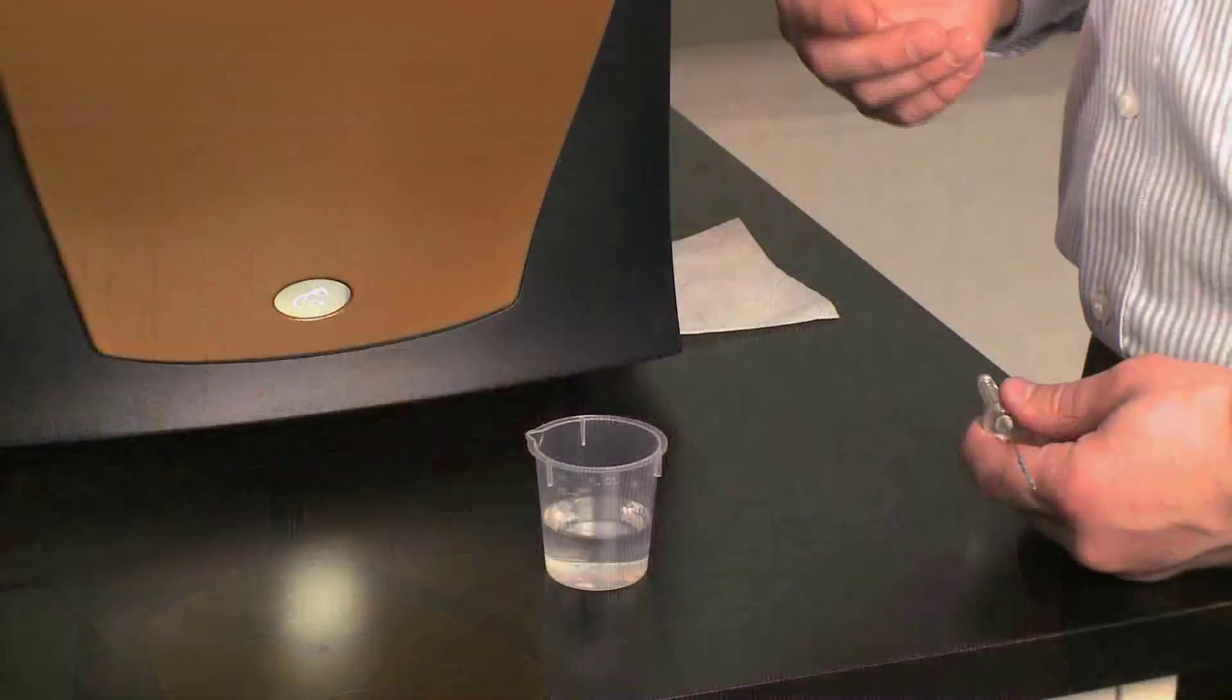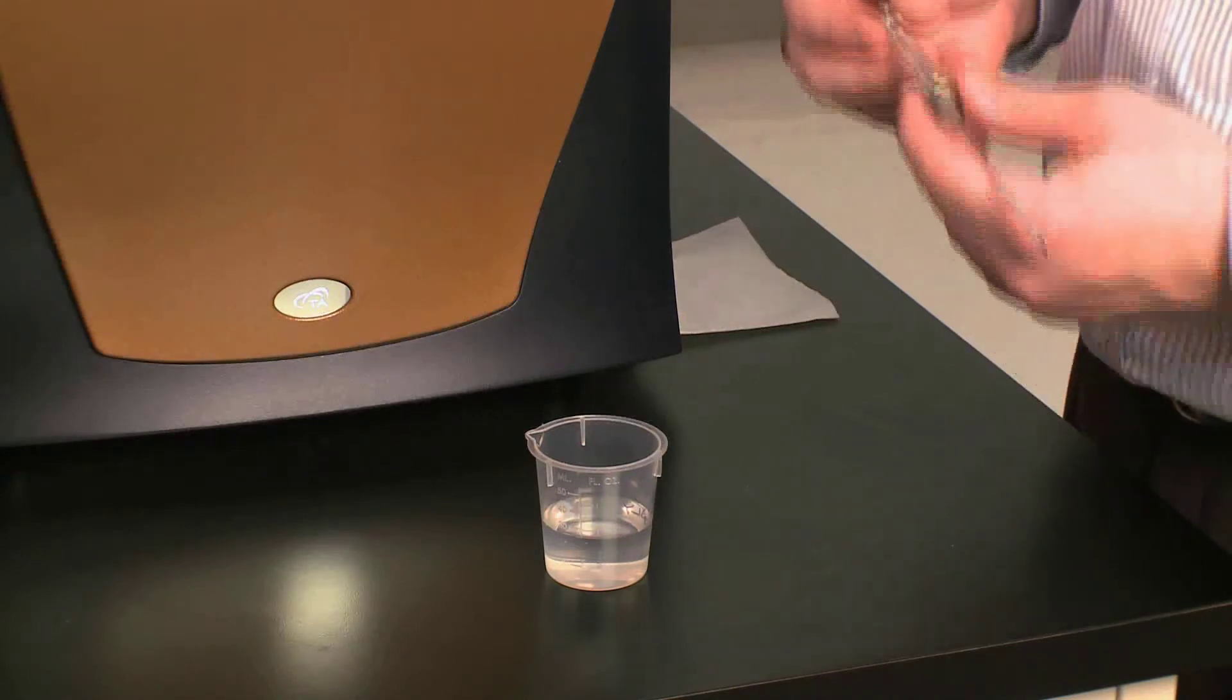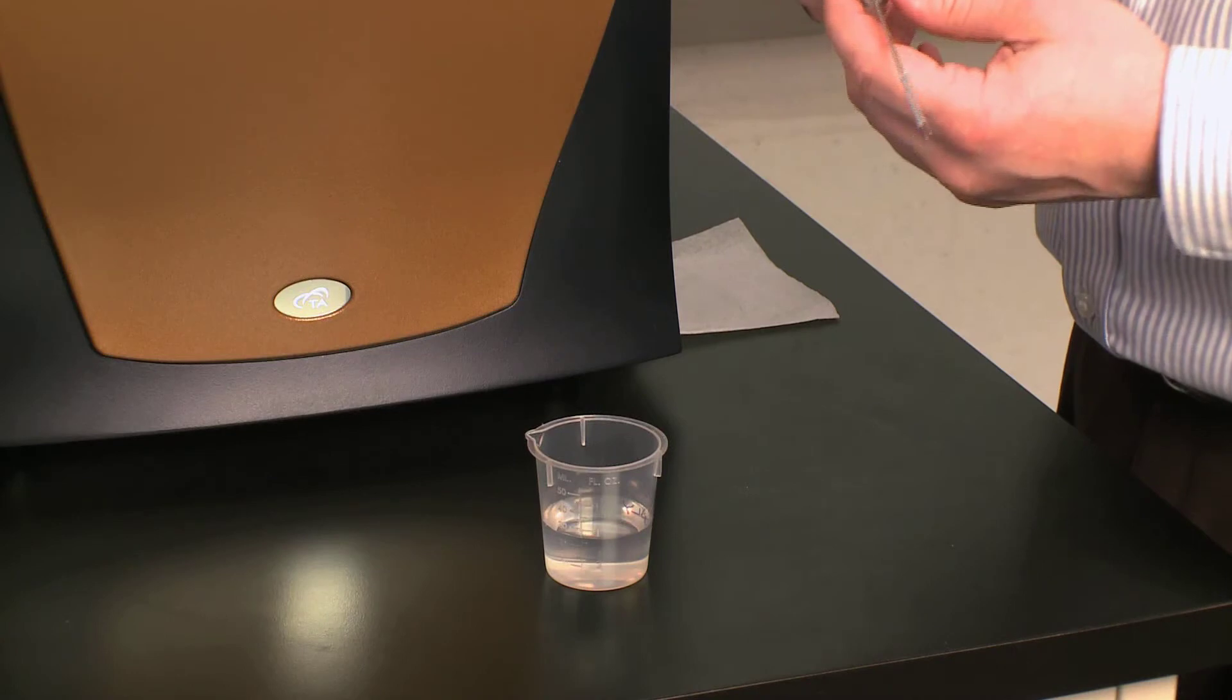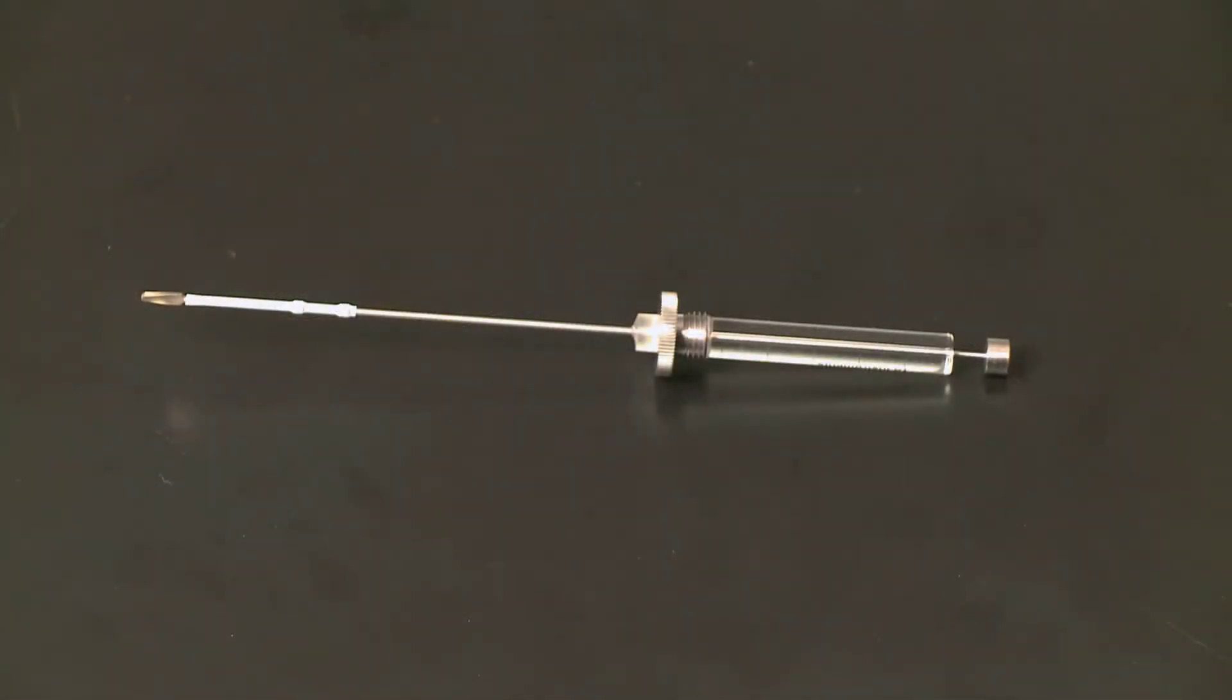In this TA Tech Tip, we're going to be filling the titration syringe for the Nano ITC. Now that you've loaded the cells of the ITC, both the sample and reference sides, you can let them equilibrate while you're filling the titration syringe. I'm using the low volume ITC, so I have a 50 microliter syringe.